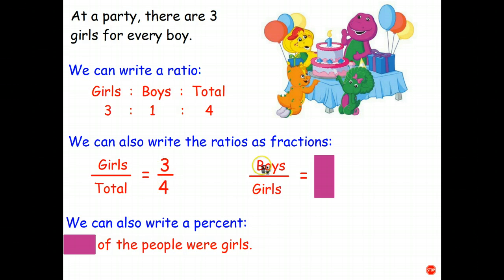What's the ratio boys is to girls? We're looking back over here. For every one boy, there are three girls. And therefore, the ratio is one is to three. So ratios can be written as fractions.